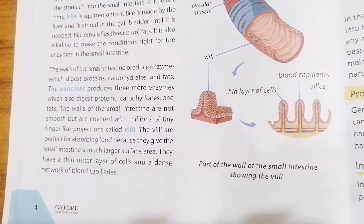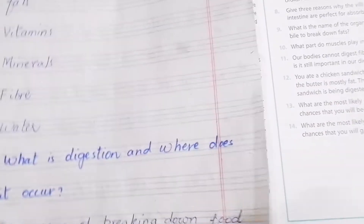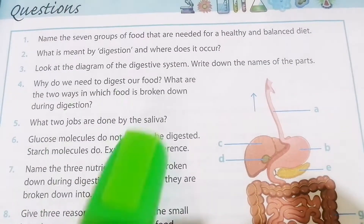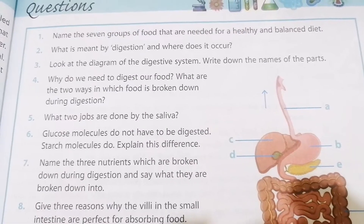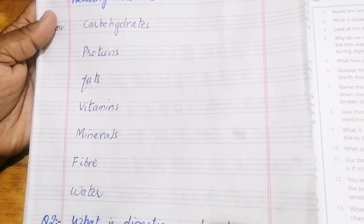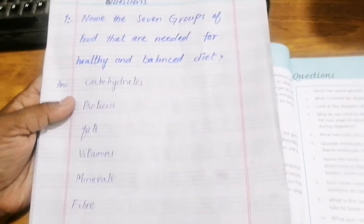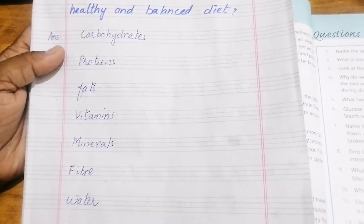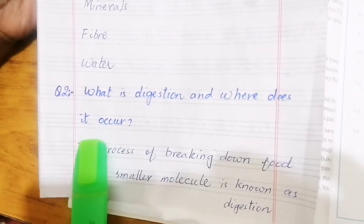Now I have prepared some textual questions. Question 1: Name the seven groups of food needed for a healthy and balanced diet. The answer is: carbohydrates, proteins, fats, vitamins, minerals, fiber, and water. Question 2: What is digestion and where does it occur?